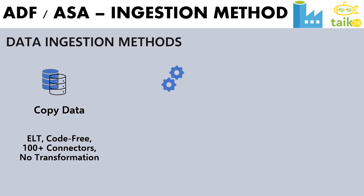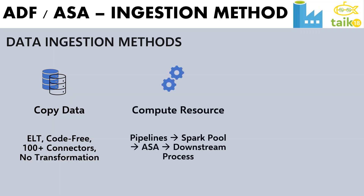The next method is about compute resources. You can create a pipeline and with the help of a Spark pool, you can make use of Azure Synapse Analytics in order to transform the data and also do further downstream processes with the help of other activities in Azure Data Factory.